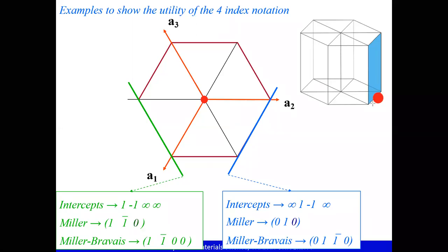Finding intercepts of the blue line: it intercepts a2 at 1, and it intercepts a3 at minus 1. The a3 axis is shown and the intersection is confirmed at -1. The interesting question is what happens vis-à-vis the a1 axis. The a1 axis runs parallel to the blue line — they do not intersect — so the intercept along a1 is infinity.